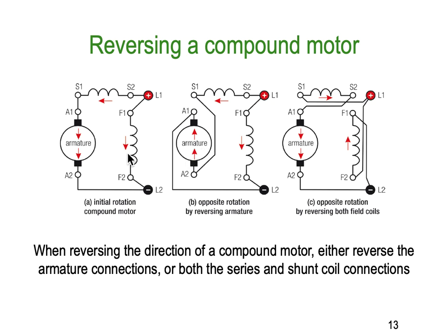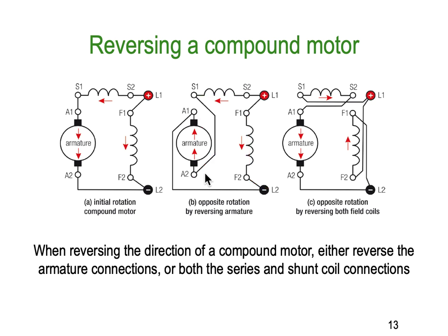Reversing a compound motor: the same principle applies — you've got to reverse either all the field or the armature. When reversing a compound motor, either reverse the armature connections or both the series and shunt coil connections. In arrangement B, everything stays the same but we've simply reversed the armature connections end to end. In arrangement C, the armature stays in the same direction but we reverse both the series and shunt field connections — you must reverse both parts of the field in a compound motor.